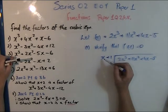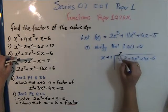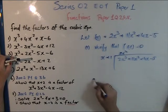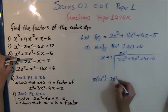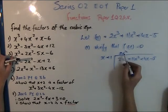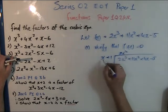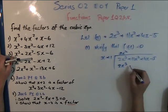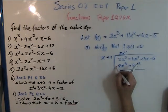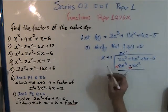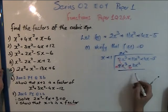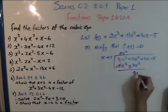Dividing (x + 1) into 2x³ + 11x² + 4x - 5: x goes into 2x³ how many times? I need 2x², because 2x² × x = 2x³. Multiply through: 2x² × x = 2x³, and 2x² × 1 = 2x². Now change the signs — the plus becomes minus, the plus becomes minus — this leads to cancellation. Result: -2x² + 11x² = 9x². Bring down the 4x.